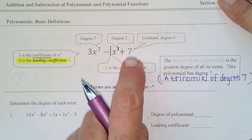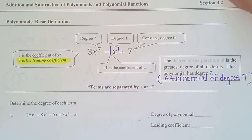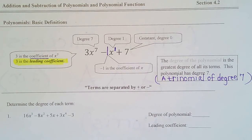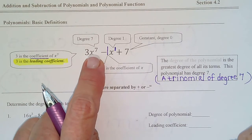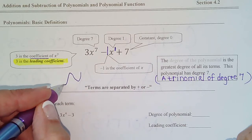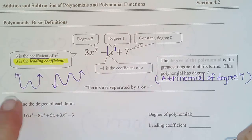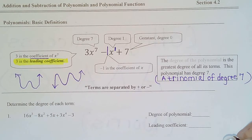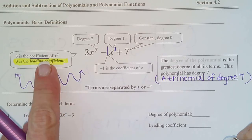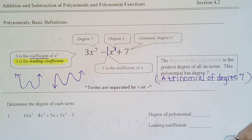The degree of the polynomial is the greatest degree of all of its terms. Since degree seven is the greatest, this is a polynomial of degree seven — or more specifically, a trinomial of degree seven. A trinomial means it has three terms; degree seven means the highest power is seven. This matters because degree seven means it graphs like an s-curve. Even powers look like U's and W's; odd powers look like s-curves. The leading coefficient then determines whether it cups up or down.